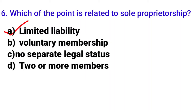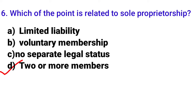Looking at the options for the sole proprietorship question: option A is limited liability — but sole proprietorship has unlimited liability, so no. Option B is voluntary membership — that's cooperative society, not sole proprietorship. Option C is no separate legal status — yes, in sole proprietorship the owner and business are the same in the eyes of the law. Option D is two or more members — that's partnership. So the correct answer is option C.